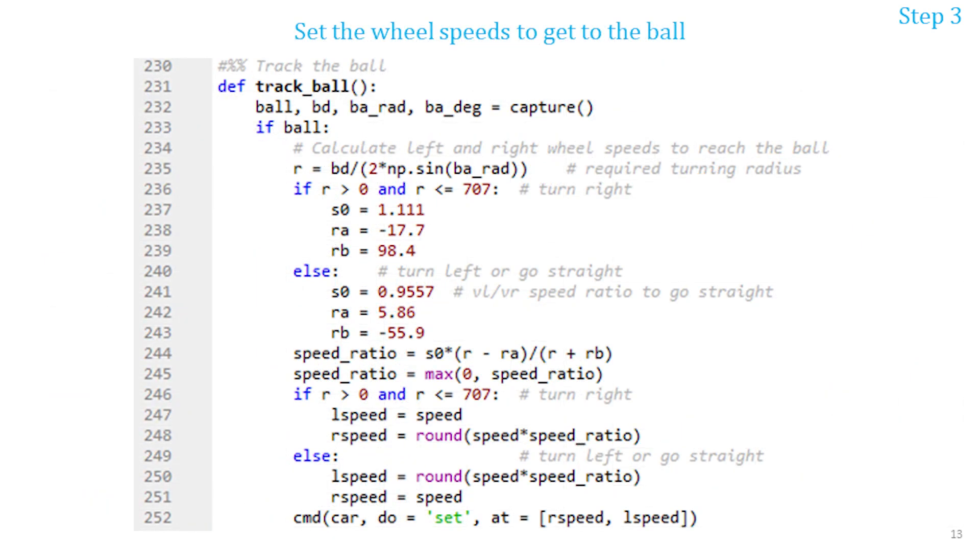I created a separate function called trackball to calculate the wheel speeds to make the turn of the desired radius to reach the ball. The code is shown here. The models for the wheel speed ratio versus the desired turning radius don't have to be very accurate because the car will constantly capture images and adjust its trajectory based on the new position of the ball in the captured images.